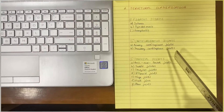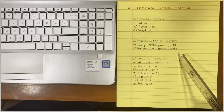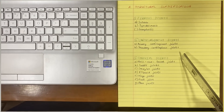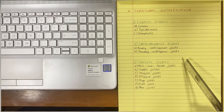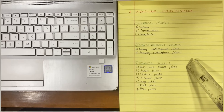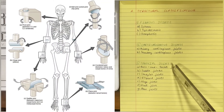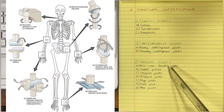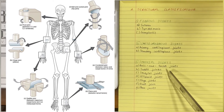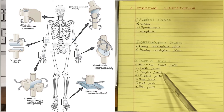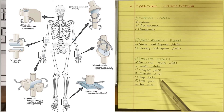The synovial joints are the most evolved and therefore the most mobile type of joints. They are divided into the ball and socket joint, the saddle joint, the condylar joint, ellipsoid joint, hinge joint, pivot joint, and plane joint.